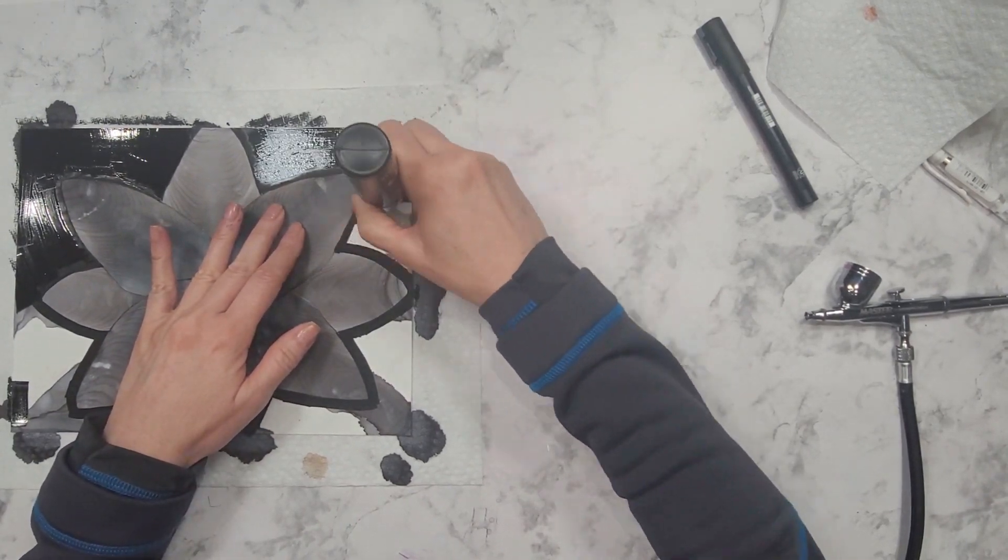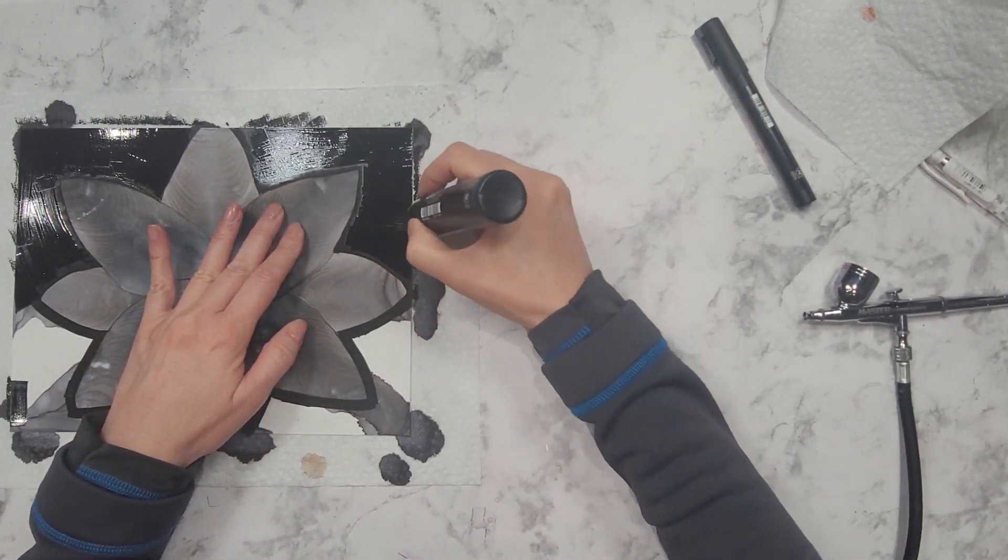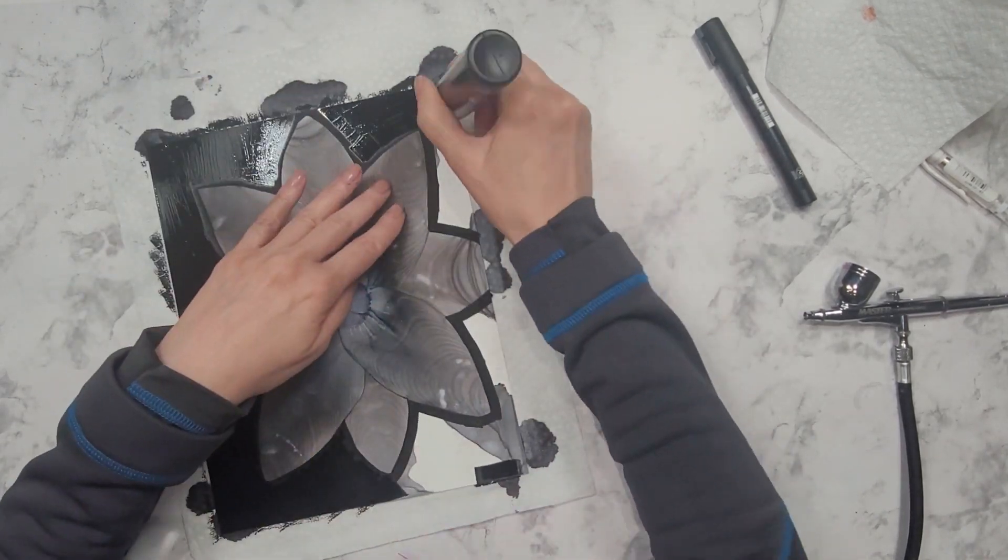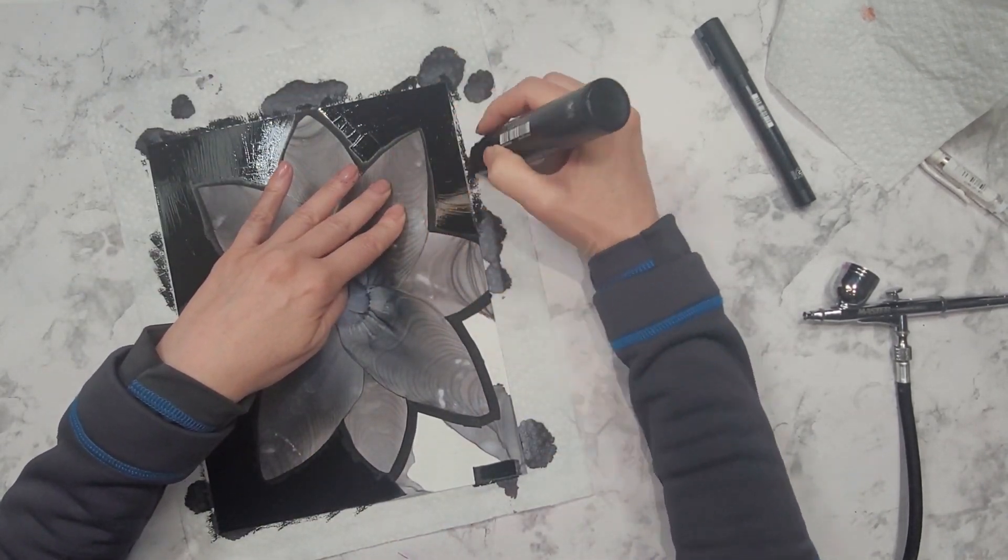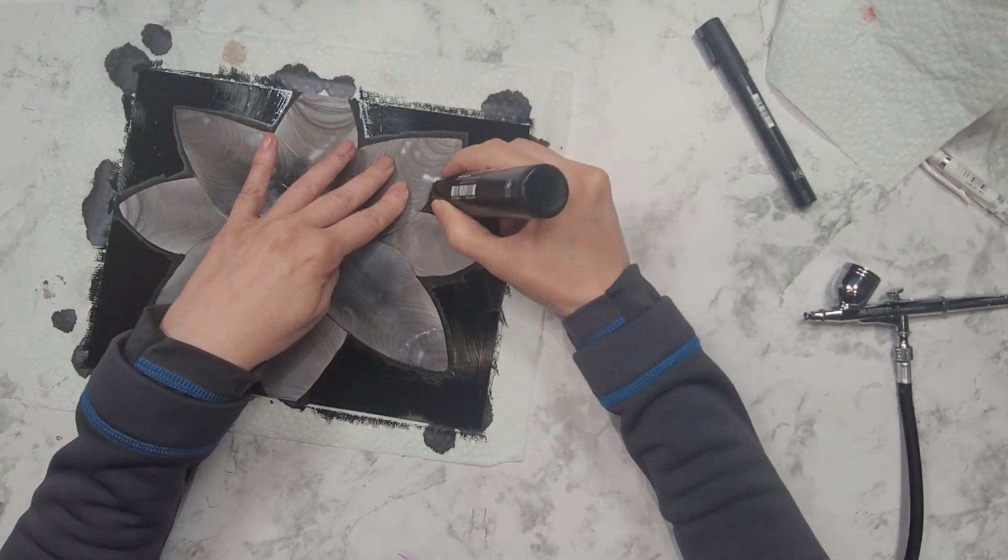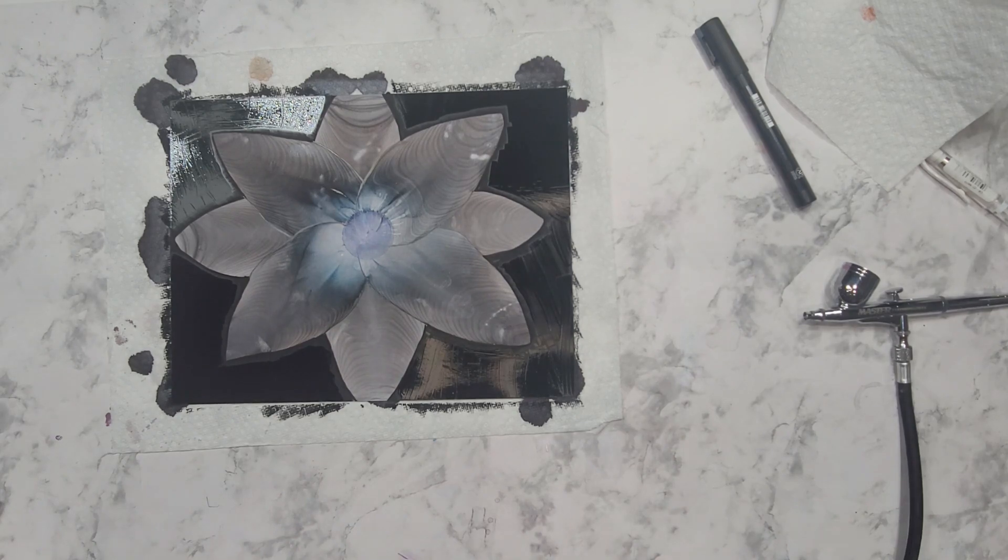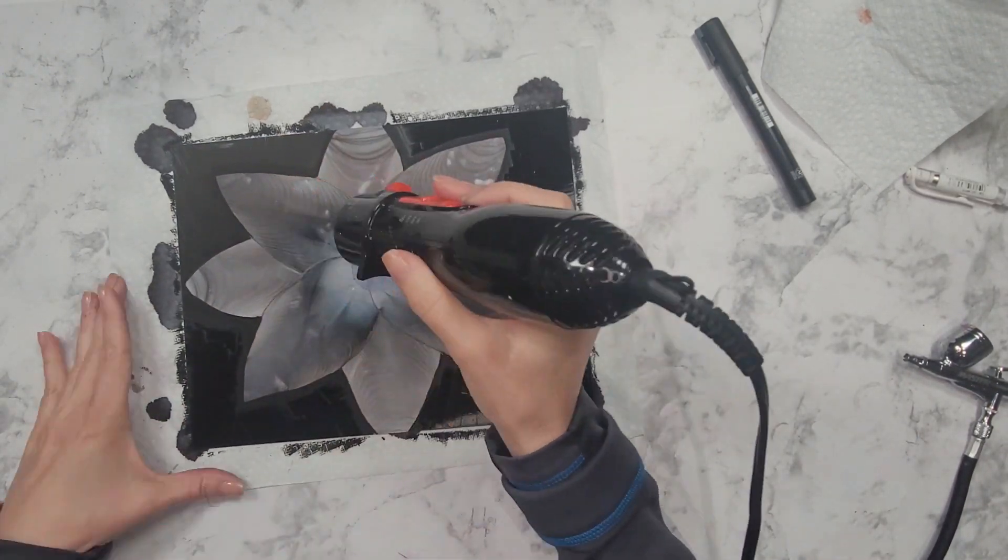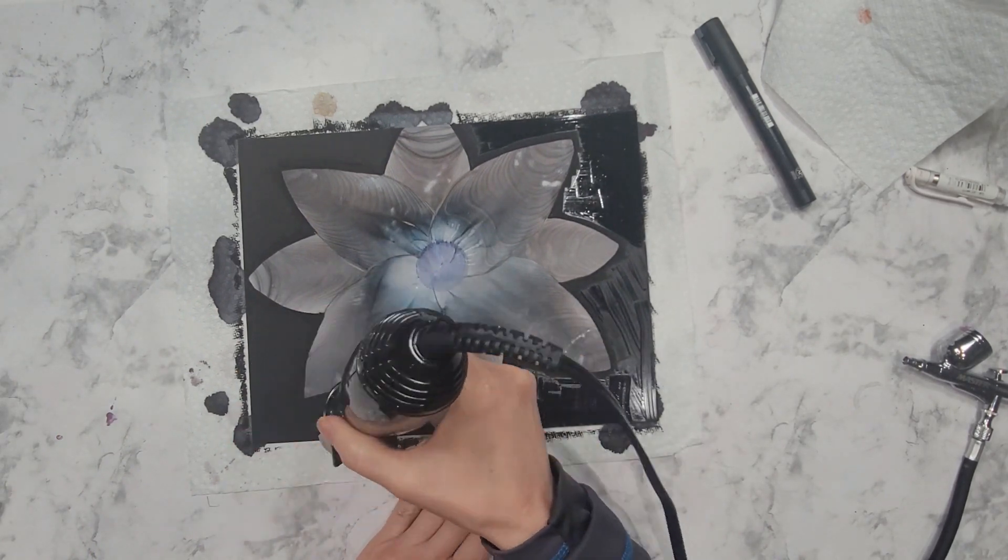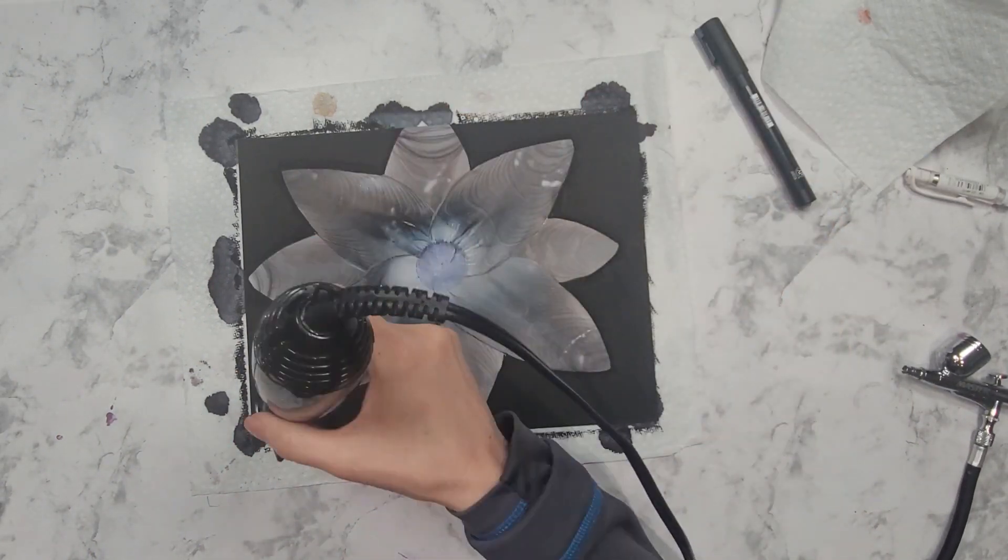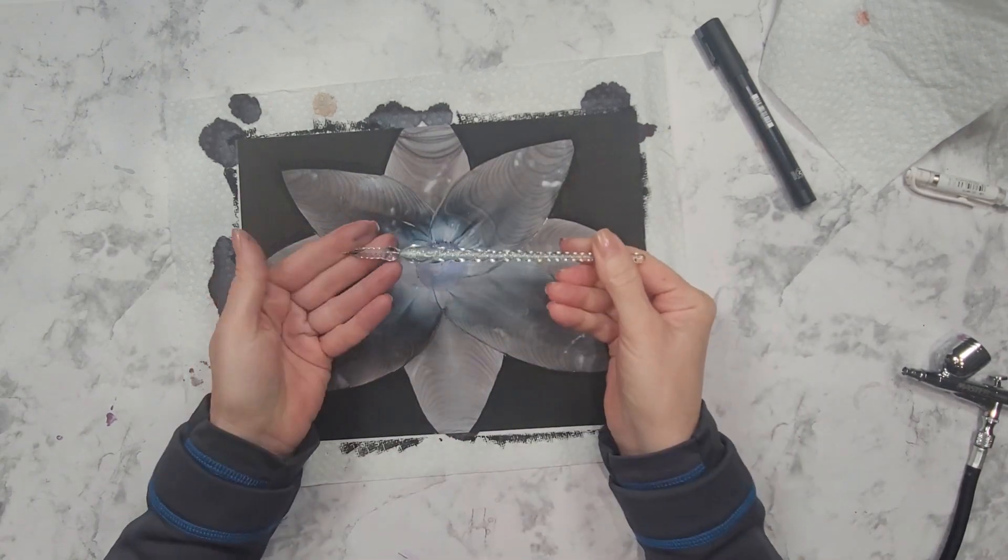Now you can see here I have this humongous Posca pen and I'm filling in the background with it, and having these different size nibs really makes this easy. If you don't have Posca pens, you can use black acrylic paint to do your background. I don't recommend using alcohol ink to do the background because it'll come out very streaky.